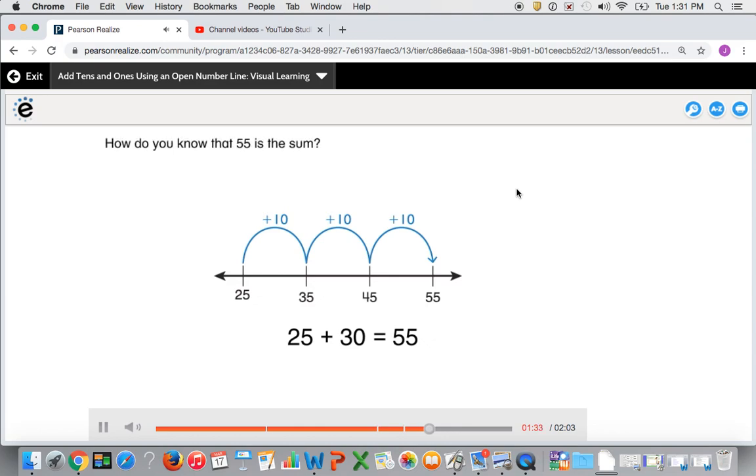How do you know that 55 is the sum? 55 is the sum because you made three hops to count on by tens from 25 to 55.